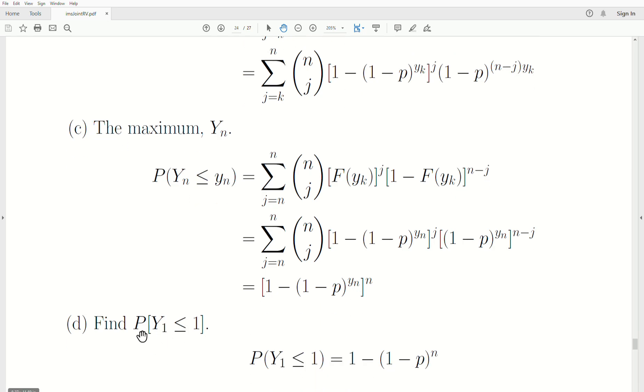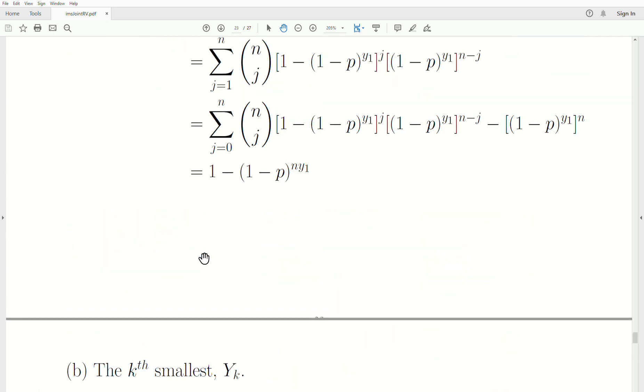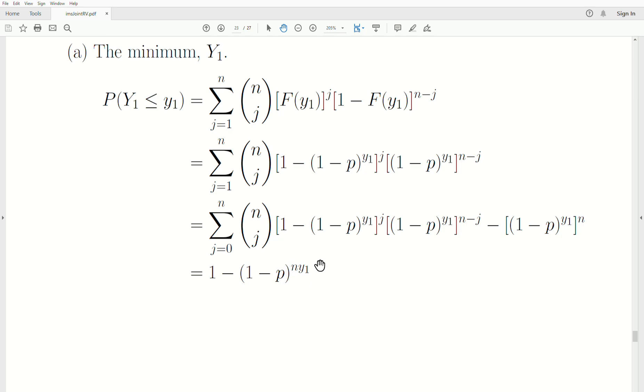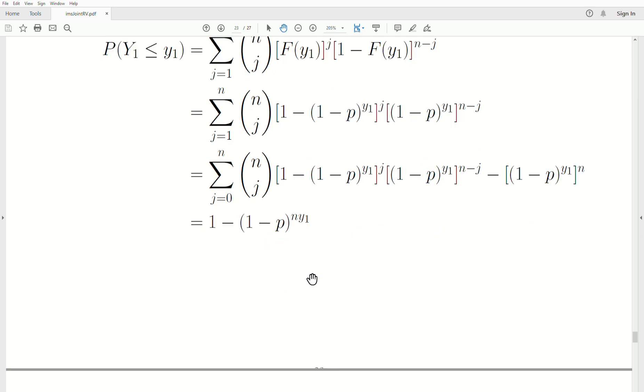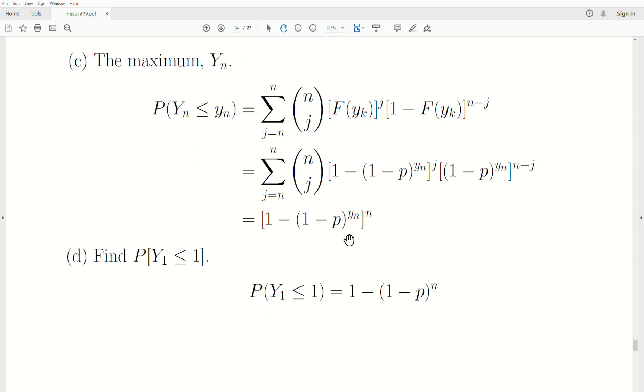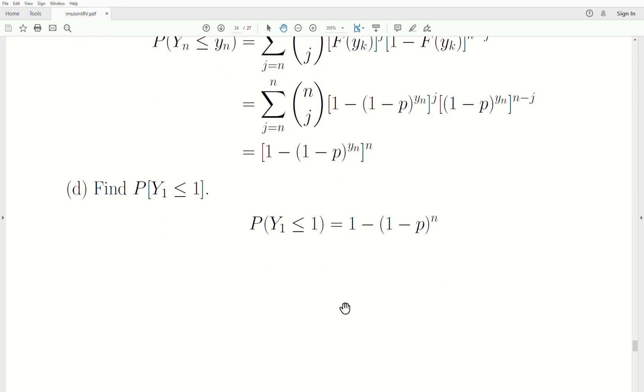Now notice that if we want to find the probability that y1 is less than some value one, that's the CDF of the minimum. We just calculated that. So we plug in one, and this is it. It depends upon our sample size.